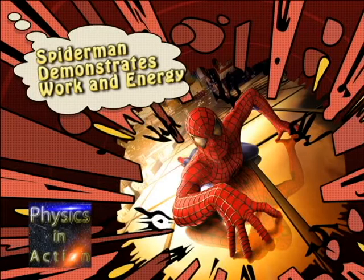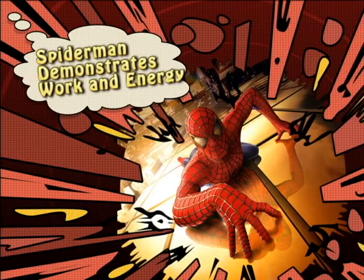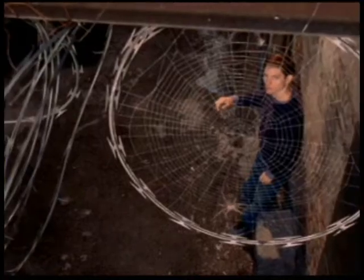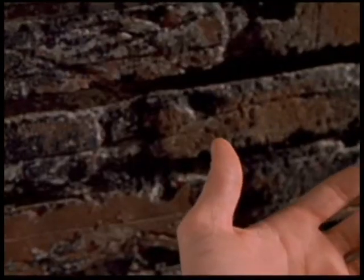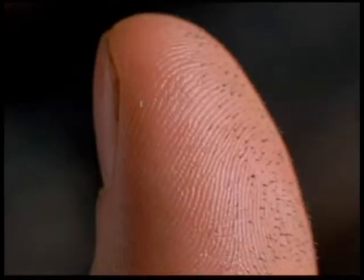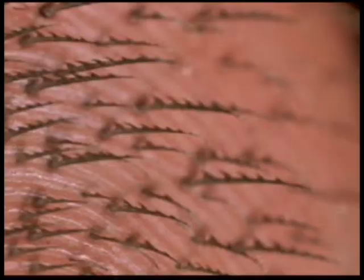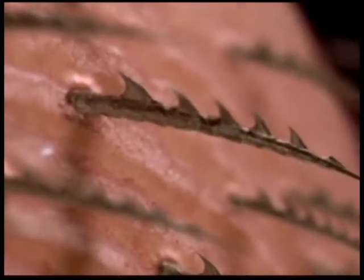In Sam Raimi's 2002 smash hit Spider-Man, Peter Parker, played by Tobey Maguire, gets bitten by a genetically mutated spider. And what happens when you get bitten by a genetically mutated spider? You gain superpowers! You start having these little tiny hairs grow out of your hands, which in this case apparently is something very cool, and you decide, hey, what the heck, I'll try climbing a wall.